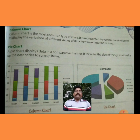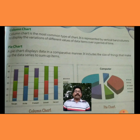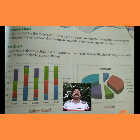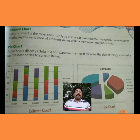As shown on the screen — Column Chart. Column chart is the most common type of chart. It is represented by vertical bars or columns to display the variations of different values of data items over a period of time. You already know about columns — vertically arranged lines are called columns and horizontally arranged lines are called rows. So, the graph or chart represented in the column system or bar system is known as a column chart.